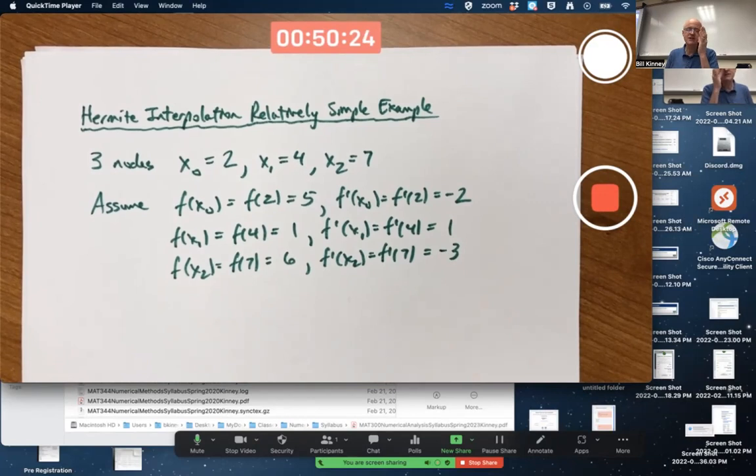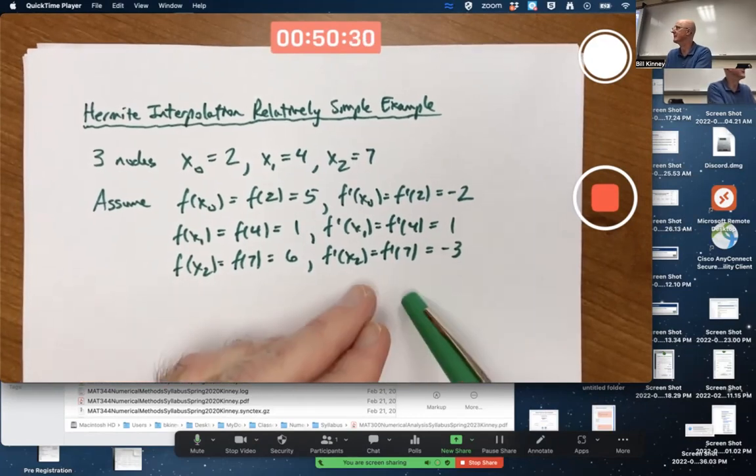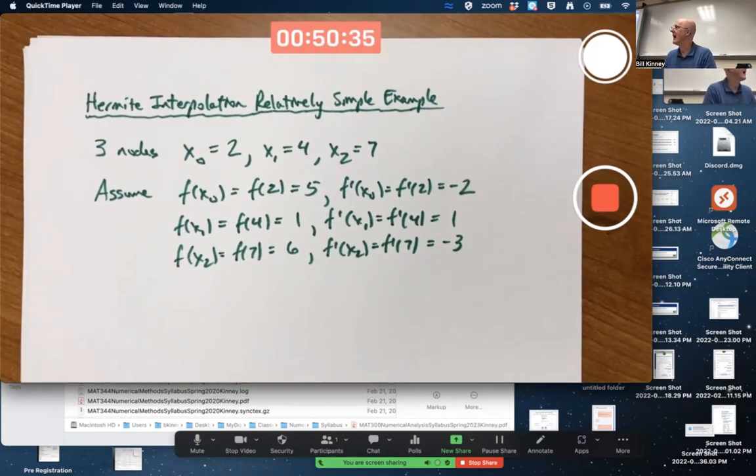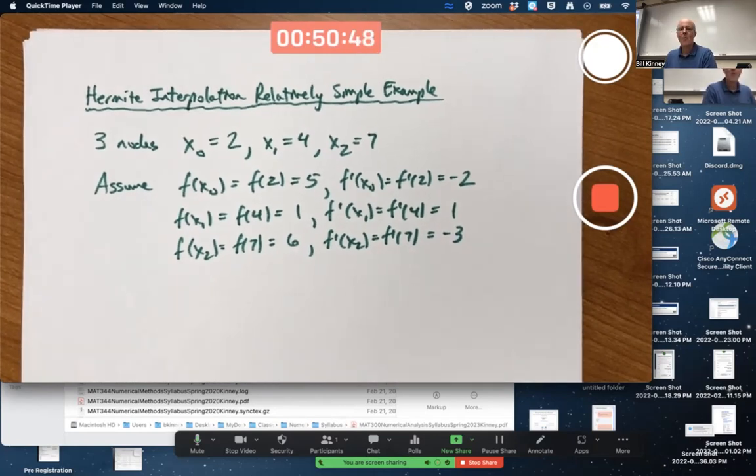Okay, so I got essentially 6 data values. 3 of them are pure function values, 3 of them are derivative values. I'm after an interpolating polynomial that will match all these values. What am I going to need? We should be able to get away with a 5th degree polynomial, because a 5th degree polynomial is going to have 6 unknown constants.